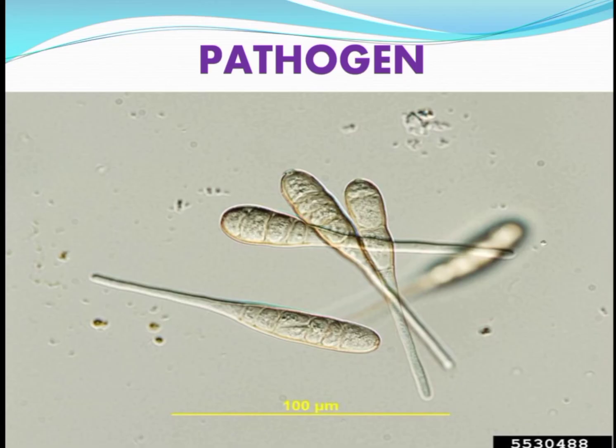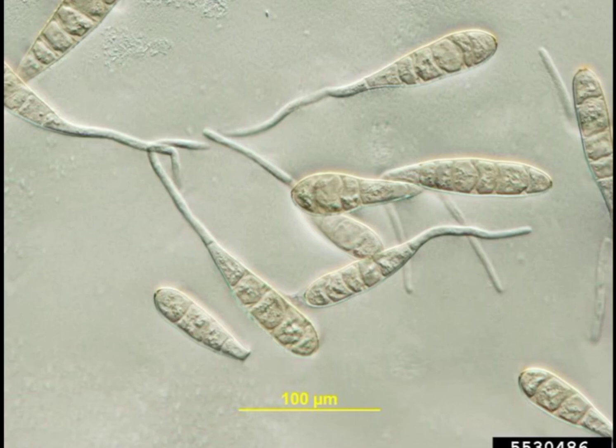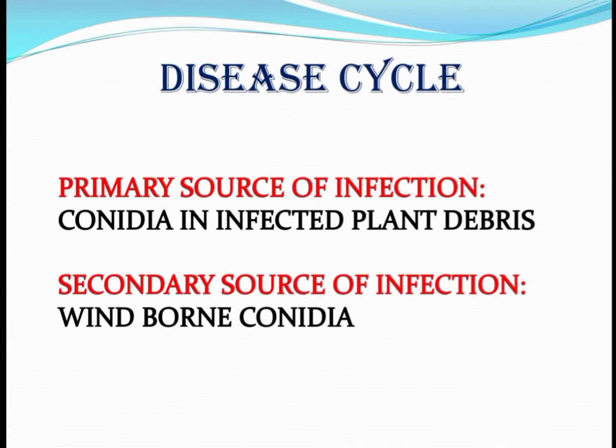Pathogen: In Alternaria porri, mycelium is branched, colored, and septate. Conidia arise singly or in groups. They are straight or flexuous, sometimes geniculate. Disease Cycle: The primary source of infection is the conidia present in infected plant debris, and the secondary source of infection is wind-borne conidia.